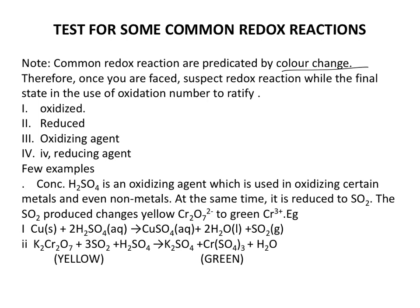Tests to ratify which one is oxidized, which one is reduced, which of the reactants is the oxidizing agent, and which is the reducing agent — a few examples. Concentrated H₂SO₄ is an oxidizing agent used in oxidizing certain metals and even nonmetals. At the same time, it is reduced to sulfur dioxide, SO₂. The SO₂ produced changes yellow Cr₂O₇²⁻ (dichromate) to green Cr³⁺.